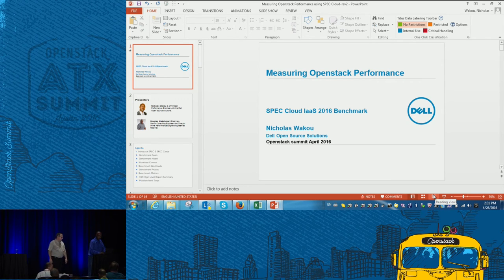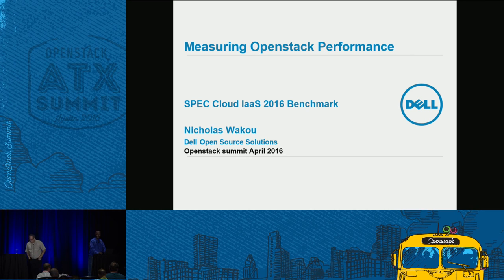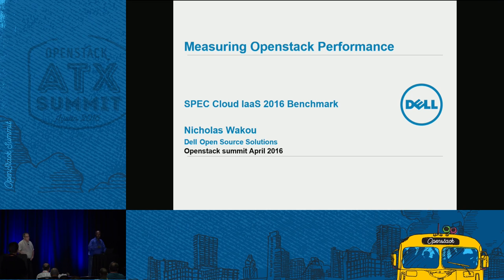Q: Can I just download this for a private cloud, make my own figures, and tell users we achieved two-thirds of AWS? A: There is a process. You have to get a license from the SPEC organization, then download the kit and run it. For publishing results there are rules, and published results must go through a review. But if you just want private numbers, you just need a license to download and run it.